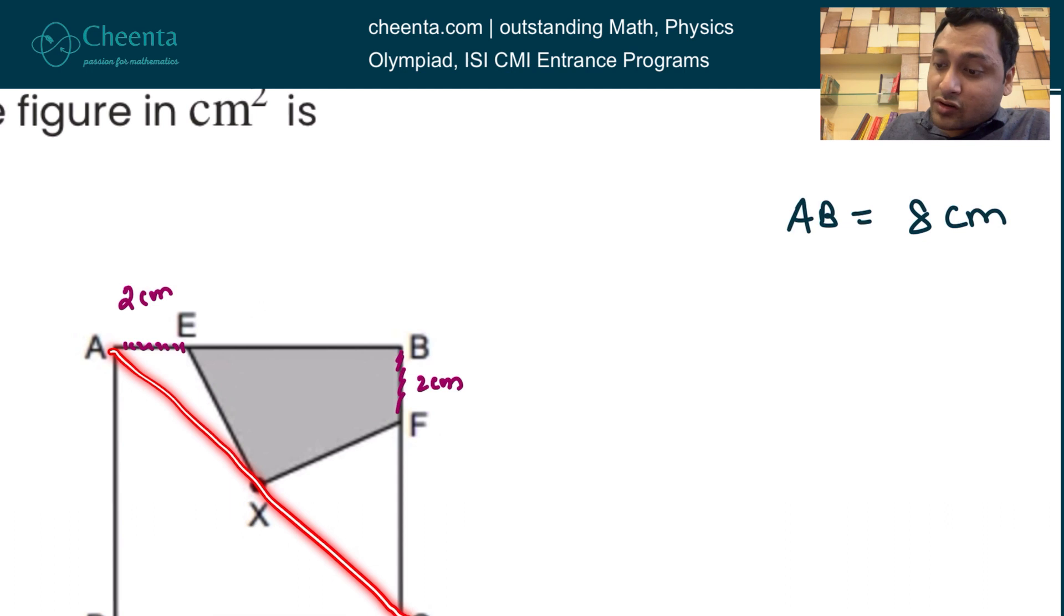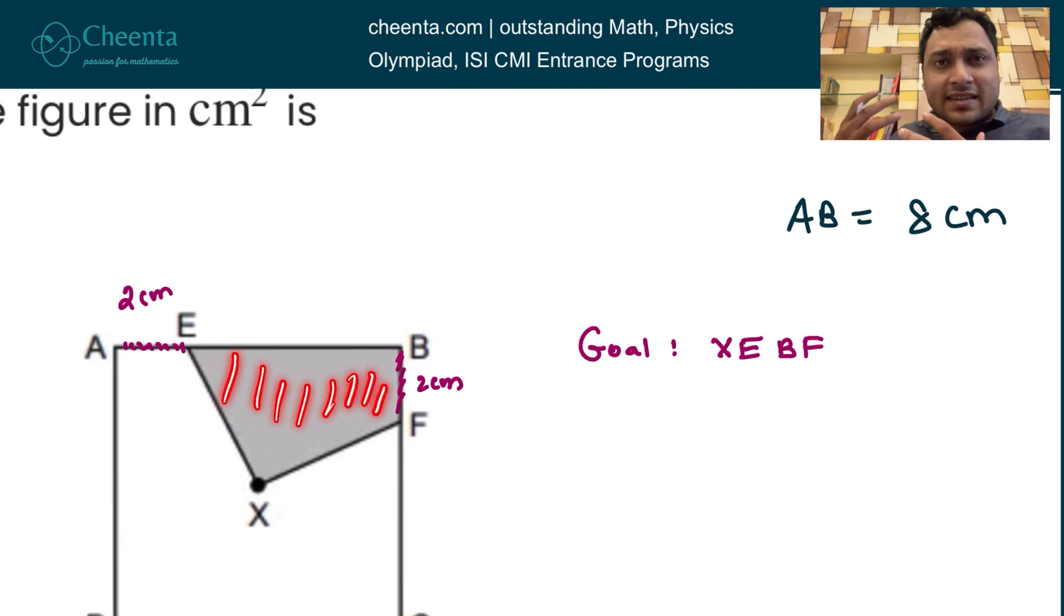And then they mark X. What is X? X is the intersection point of the diagonals or the center of the square. Our goal is to find out the area of XEBF, the shaded region. It's a very common type of problem.